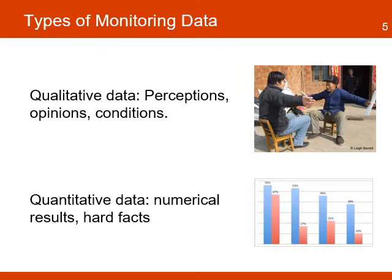Qualitative data seeks to uncover the context, perceptions, and quality of the intervention, as well as opinions about a particular experience or condition as the beneficiaries view it. Quantitative data measures the status or change of a specific indicator and provides numerical results.